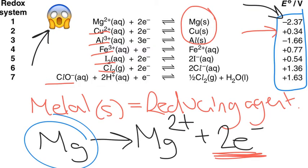Now by contrast, the most positive value—if we were looking at the most positive one there, we can see that our most positive is the +1.63V down here, which is for this one at the very end. The ClO⁻ half equation, and we can also see here, which is quite important actually, we've definitely got some acidic conditions in this one.